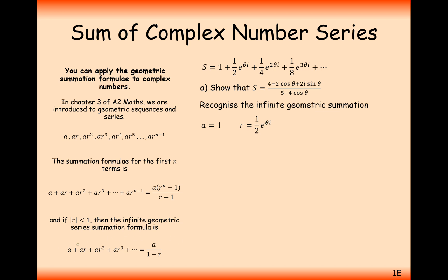This formula only works if |r| is strictly less than 1. No matter what value of θ we have, because it's multiplied by one-half at the front, it's always going to be less than 1, so this condition is satisfied and we can use the formula. There's no n value this time as it's infinite. Applying the formula for an infinite geometric series gives us 1 over (1 minus one-half e^(iθ)).